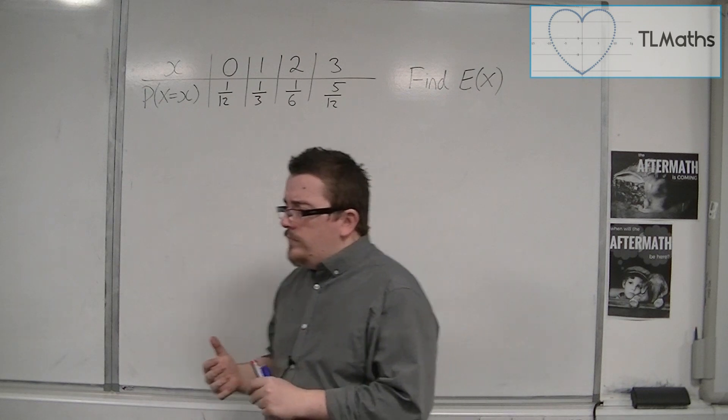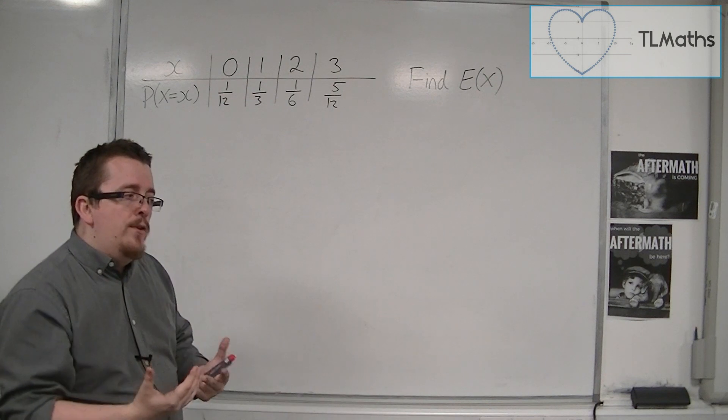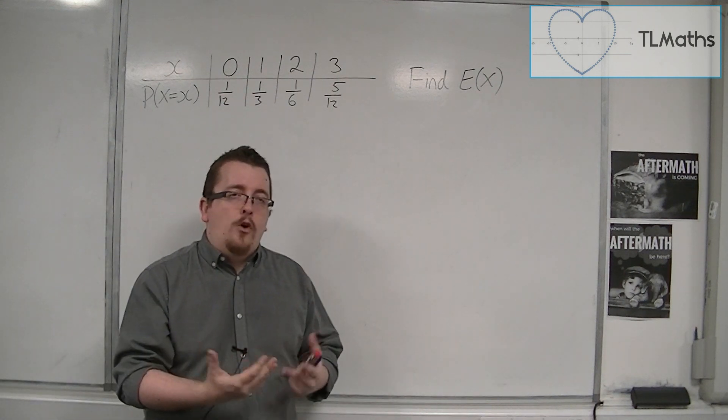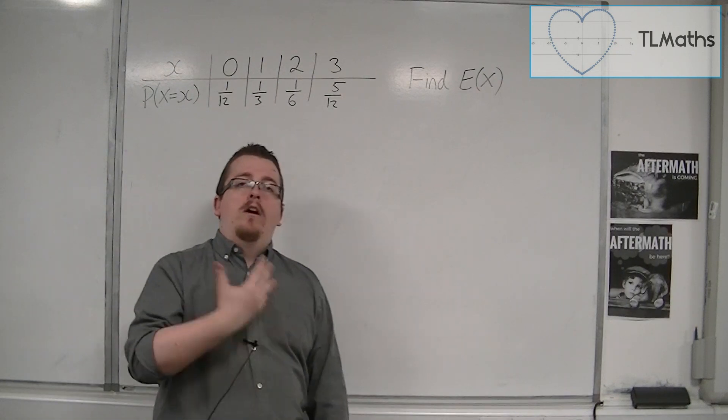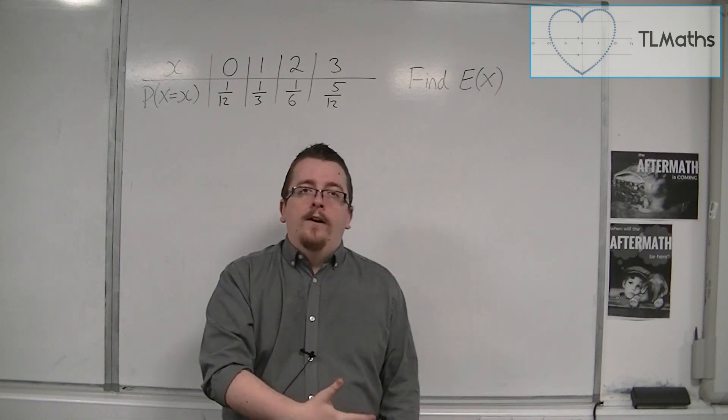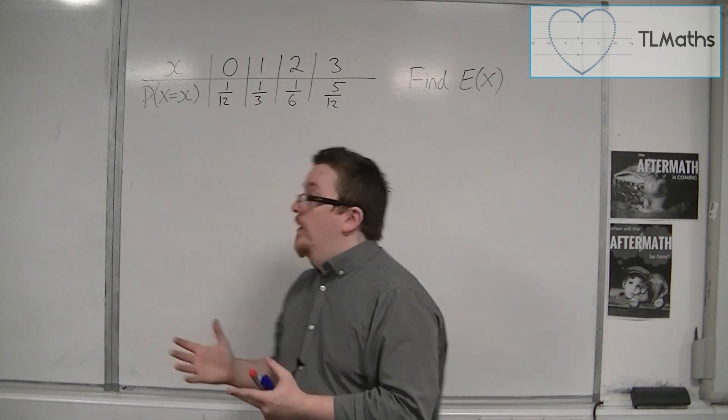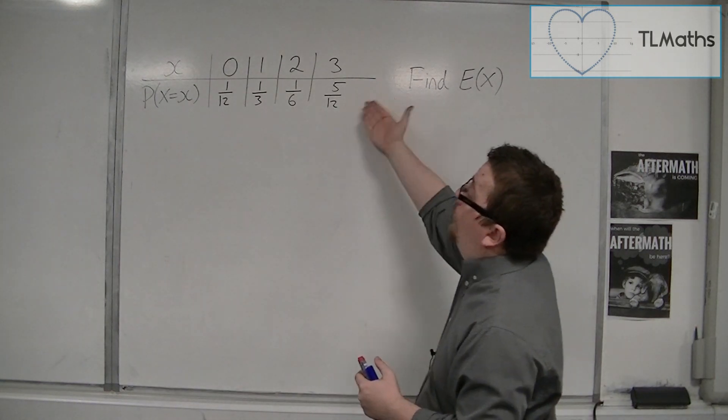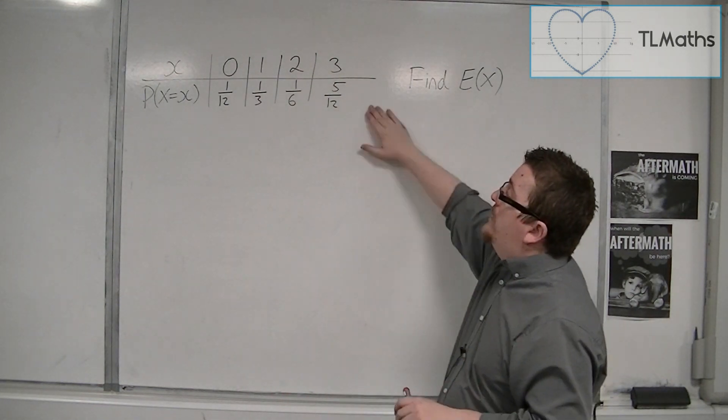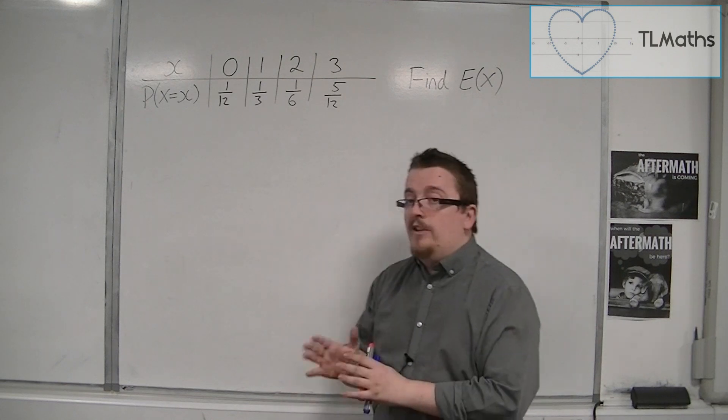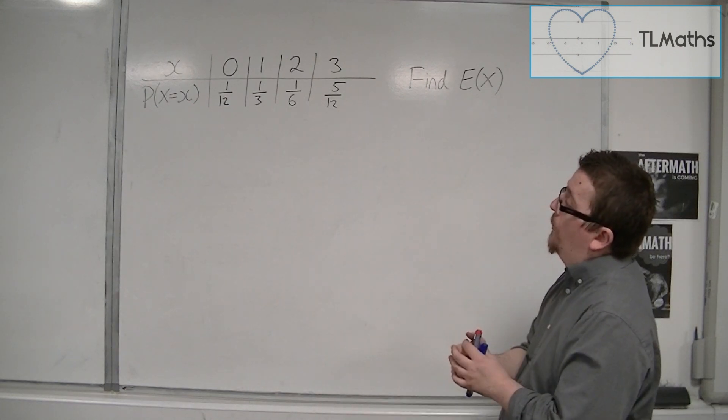Well, effectively what it means is the value that on average I would expect to get after a long, long time. Let's say that this is a spinner with four sides, and these are the probabilities of getting each of those sectors on the spinner.